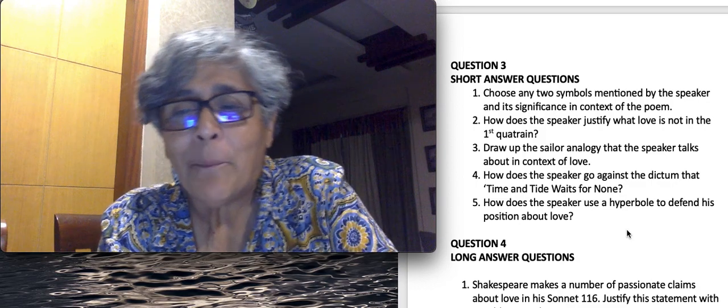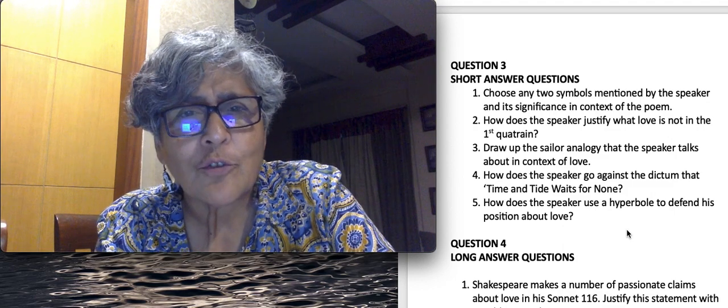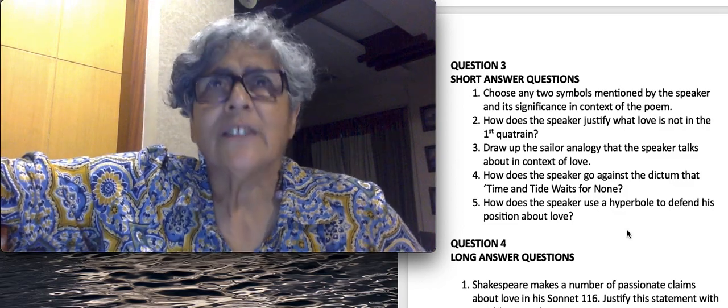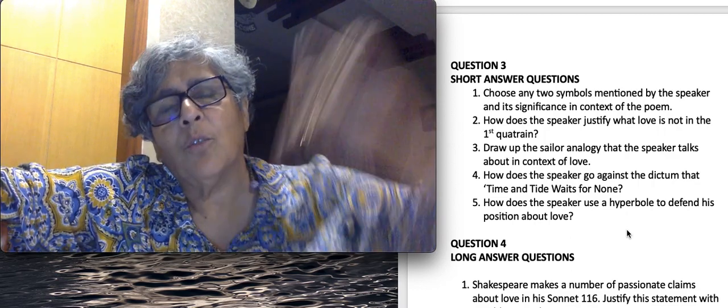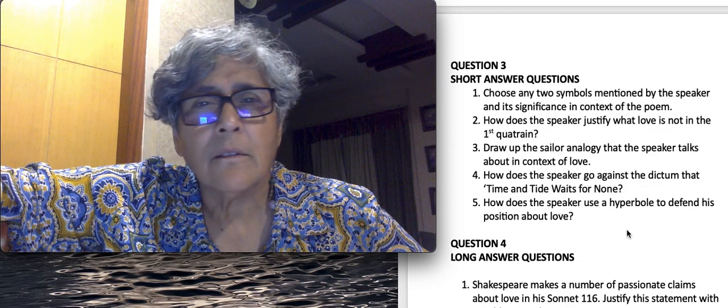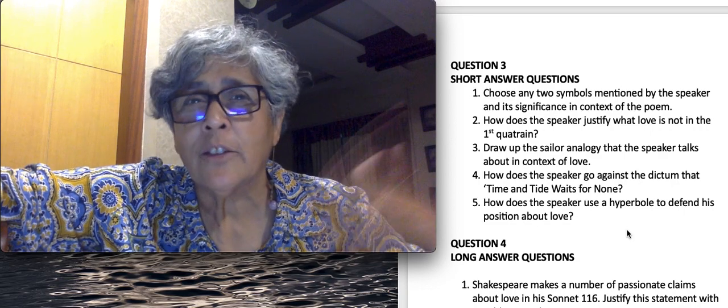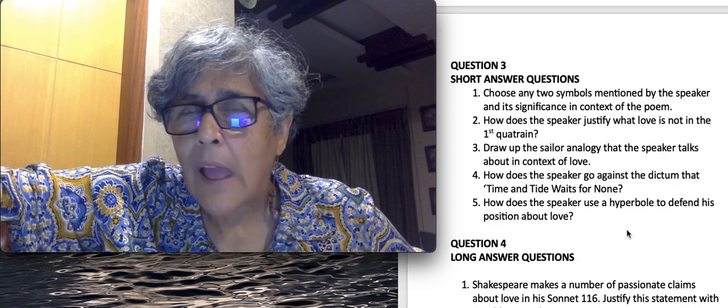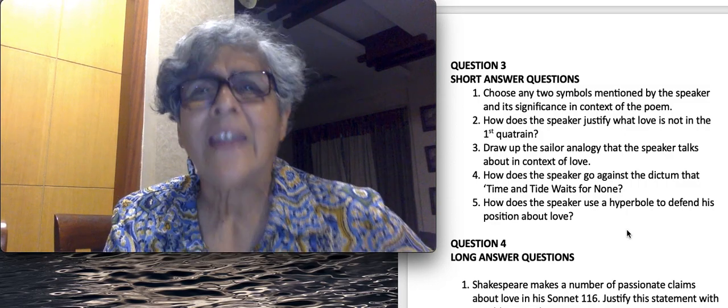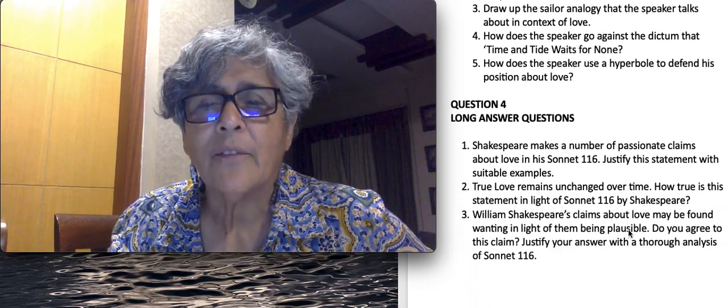Even if people die and go away, love is eternal. We talk about love stories forever and ever. The last one is how does the speaker use a hyperbole to defend his position about love? You concentrate on the last two lines where he's throwing a challenge. It's really a vow, a challenge that if anybody can challenge what he's spoken about love being so constant, endless and everlasting, then he's never been a writer and no man has ever loved. It's a kind of hyperbole, a grandiose declaration. Remember, 50 to 70 words. Don't cross that.